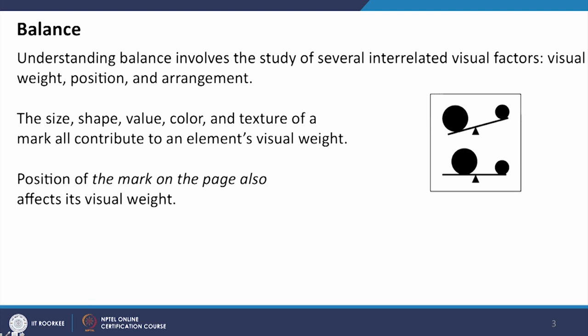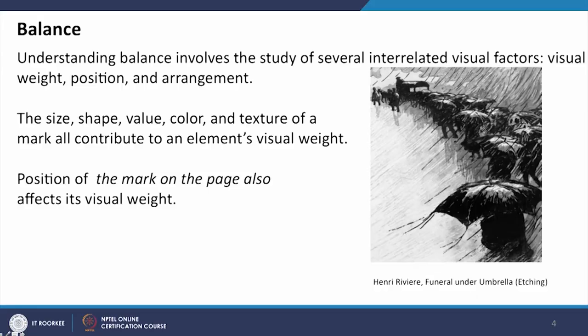Similarly, by composing through the permutation and combination of different size, shape, value, color, and texture we can achieve balance even without putting the same thing on both sides of the fulcrum. In a visual composition the central axis acts as a fulcrum — we can put different things on the right and left hand sides and still create balance. Here is an example where a heavier image with higher contrast is balanced by lot of intricacies on the other side — a darker part balanced by a lighter part.